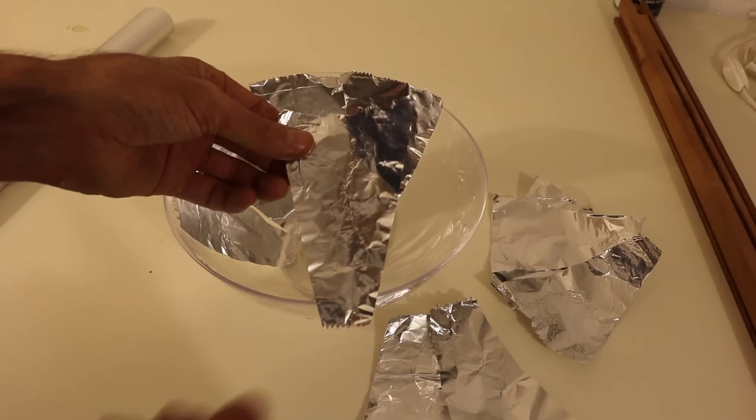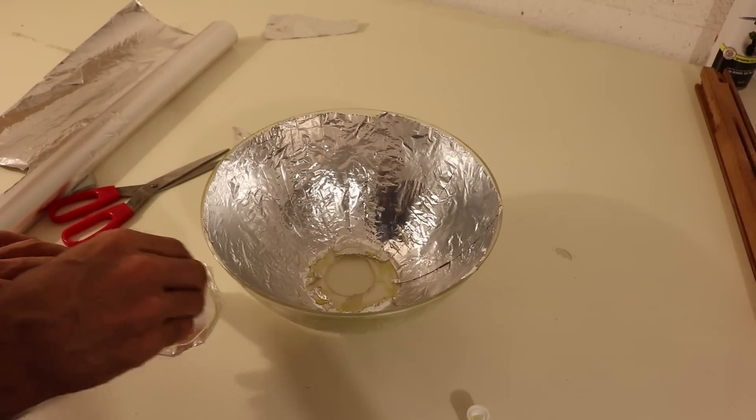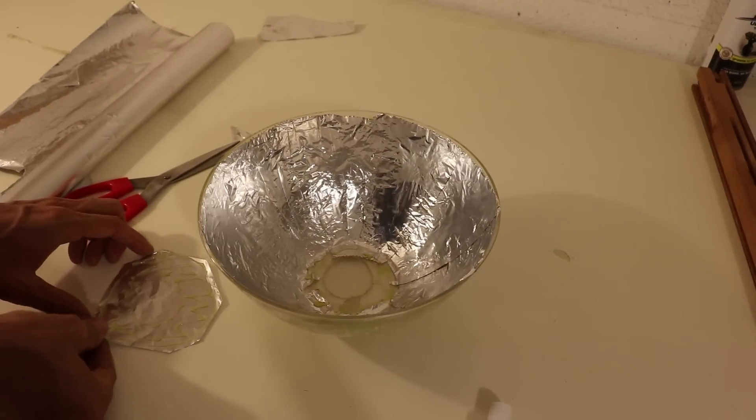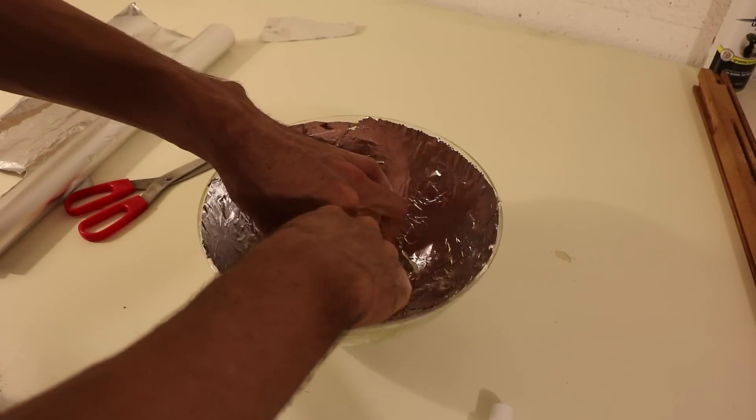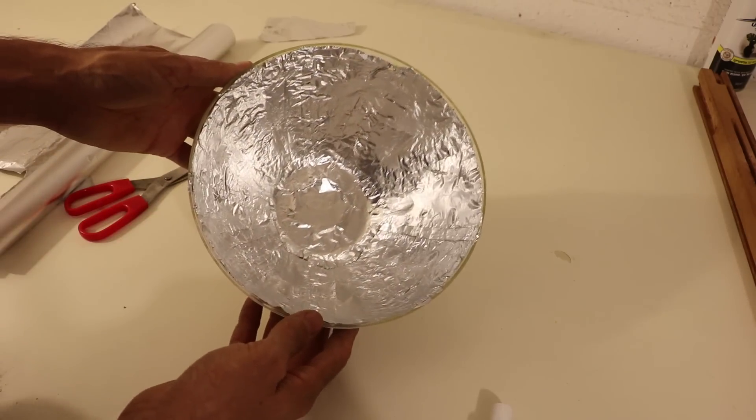And now it was time to make the reflector. I took aluminum foil and cut it into trapezoids, so it fits into the bowl. I glued all the pieces, a bit overlapping, using some contact adhesive. And it actually came out better than I thought it would.